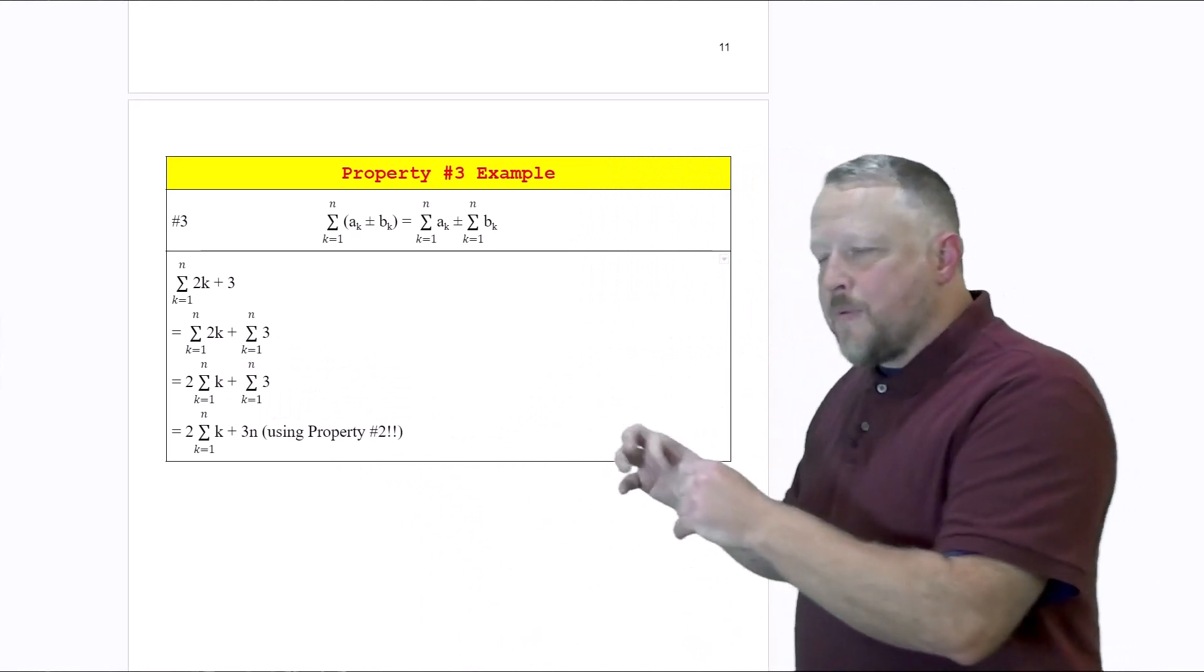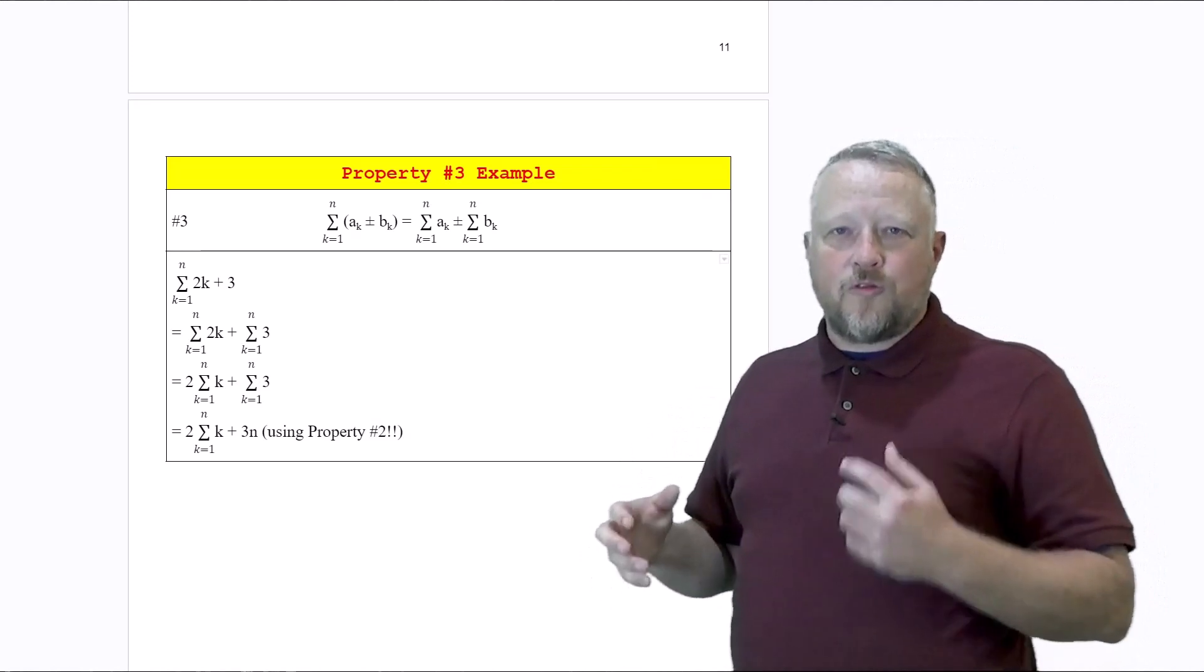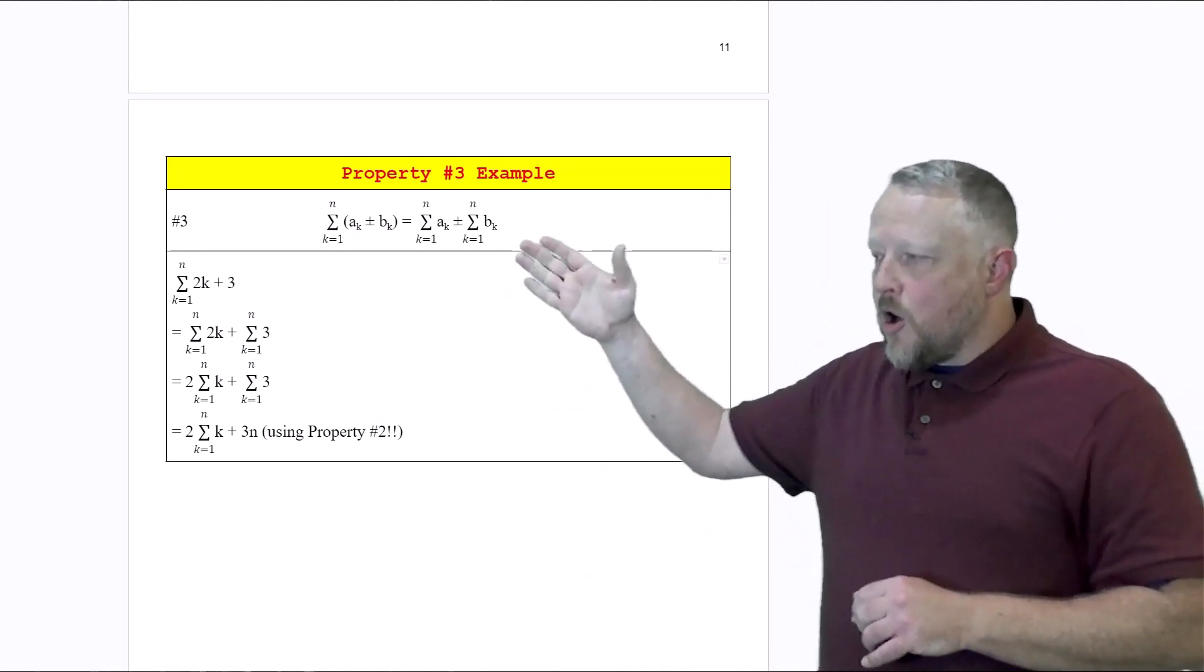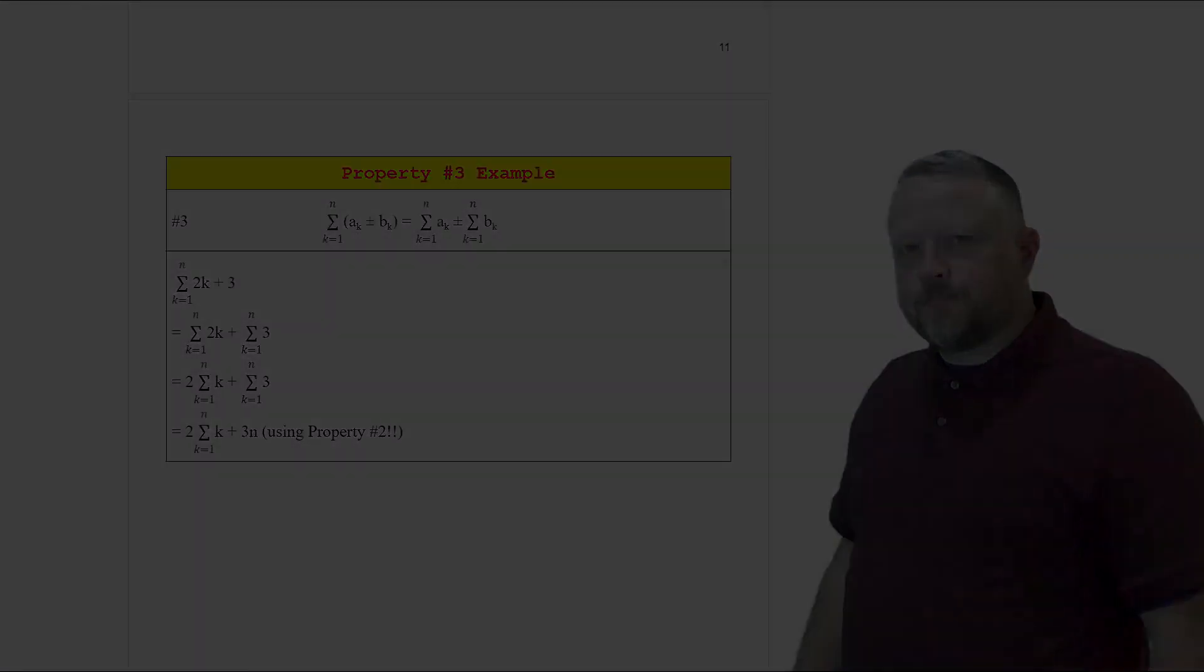Notice all these properties are trying to make it just a little bit easier for you to solve in the long run. That's what's happening when we have property number three in this particular example.